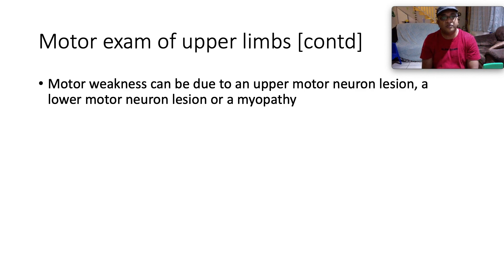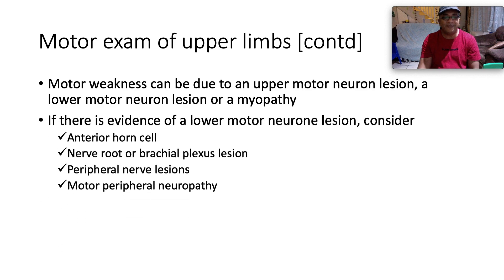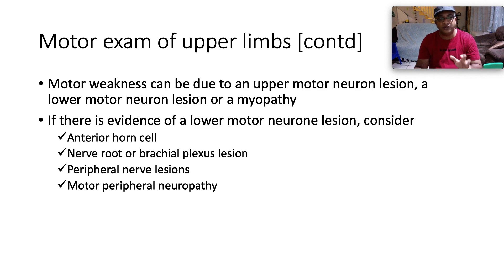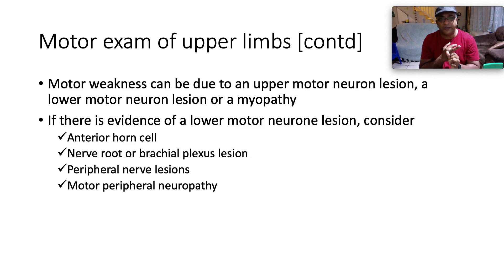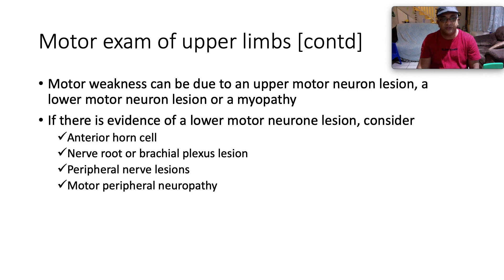Motor weakness can be due to an upper motor neuron lesion, lower motor neuron lesion, or a myopathy. If there is evidence of a lower motor neuron lesion, consider whether this involves the anterior horn cell, nerve root, or brachial plexus, whether it's a peripheral nerve lesion, or a motor peripheral neuropathy.